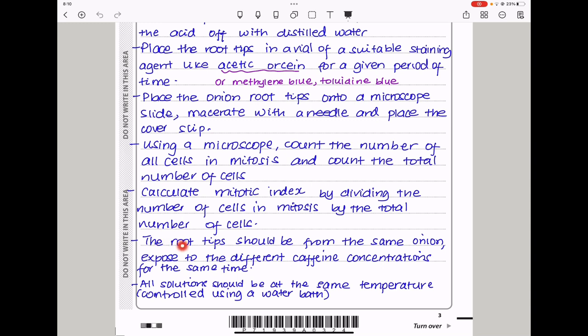In carrying out this experiment, the root tips should be from the same onion and exposed to different concentrations of caffeine solution for the same period of time. All solutions should be at the same temperature, which can be controlled using a water bath.